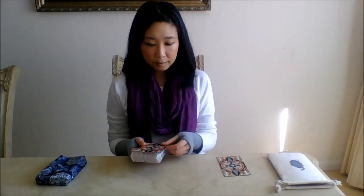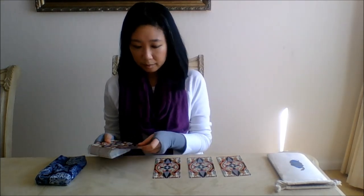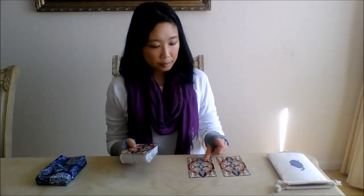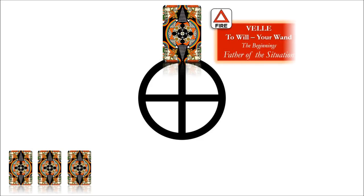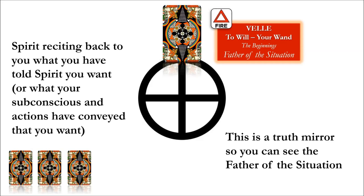Draw four cards from the top of the pack — one, two, three, four. Set aside your deck and collect these four cards together, maintaining the sequential order. Take the first card and set it into place at the north sector of your spread. This card measures the intensity of fire and the strength of this element. What is it that you really want? This is spirit reciting back to you what you have told spirit you want — your inner voice, your subconscious. This is a truth mirror so you can see the father of this situation. If this is a general reading, the fire card foretells career matters.